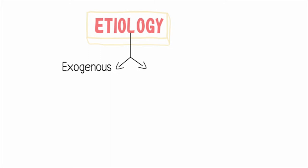Certain factors may cause aphthous ulcers. These factors may be either exogenous — that is, any bacterial infection, particularly a form of alpha-hemolytic streptococci or H. pylori — or because of any trauma such as self-inflicted bites, tooth brushing, any dental procedure, or badly fitting dentures. It may also be seen in patients who have stopped smoking. These exogenous factors can be remembered with the mnemonic BATS.